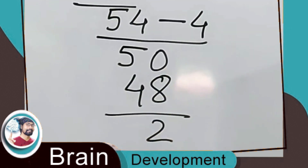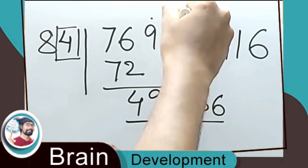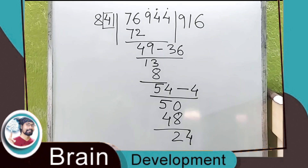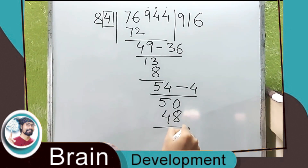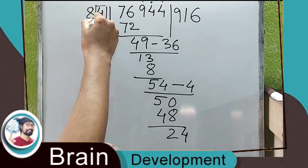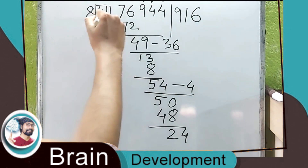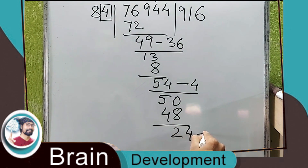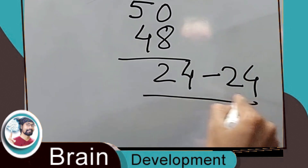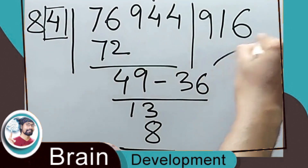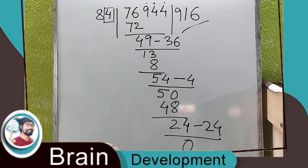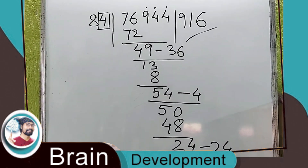So 2 remains. We know this 4 has to come down — that is 24. Four into six is 24, and 24 minus 24 is zero. So the final answer is 916. This is an easy process, and if you skip the video you'll miss a lot.